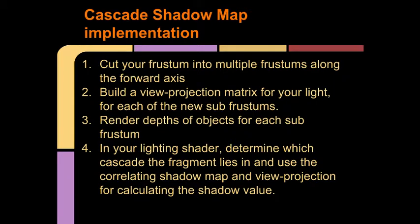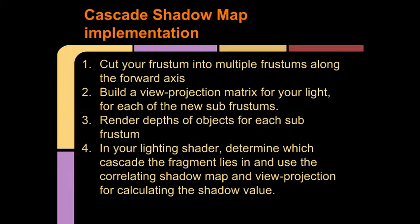So how do we implement cascaded shadow maps? First, we will cut our view frustum into multiple frustums. If we cut a frustum perpendicular to the view direction, the result will be two new frustums. Next, we will build the view projection matrices for each of our new frustums. If we had already written a technique for building these matrices for a single frustum, the same technique should work for however many new frustums we have. Then we will render the depths of our objects to each of our shadow maps, but we will only need to render the object for a given shadow map if the resulting shadow would be in view of the frustum for that shadow map.